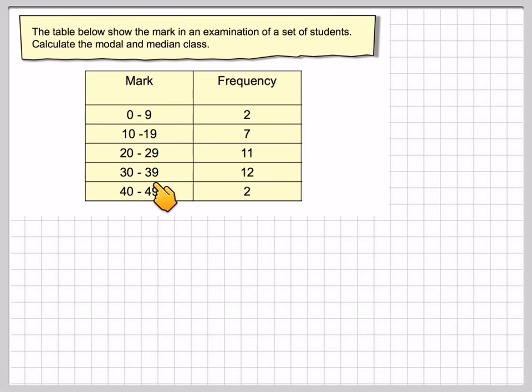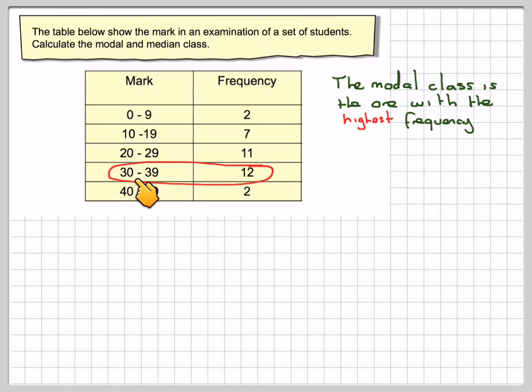So here we have the mark. The data has been grouped. In order to find the modal class, you look down the frequency and take the highest value, which is 12, and therefore the modal class will be from 30 to 39.